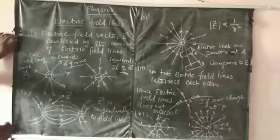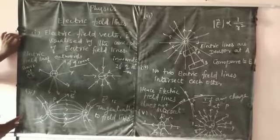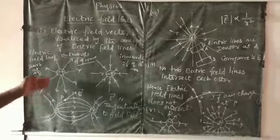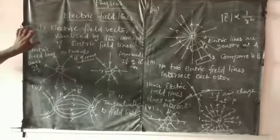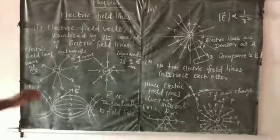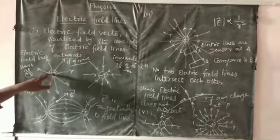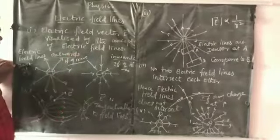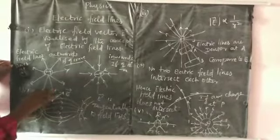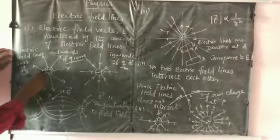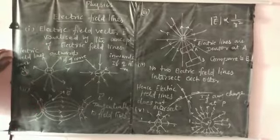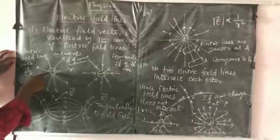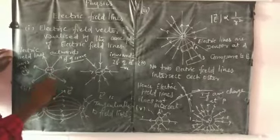The electric field lines drawn when a charge is placed in space are governed by the following rules. First, the electric field lines start from the positive charge, and terminate at the negative charge or at infinity. So, electric field lines start from the positive charge and end at the negative charge or at infinity.